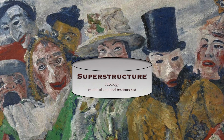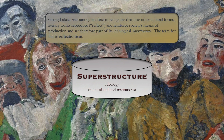Now let's talk about the role of culture, and specifically of literature, in Marxist philosophy. Lukács was among the first to recognize that, like other cultural forms such as painting or music, literary works reproduce and reflect — to use a key word — society's means of production, and therefore are part of its ideological superstructure. The term for this is reflectionism: culture reflects the means of production and the ideology of the society in which those cultural products are produced.